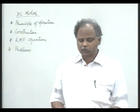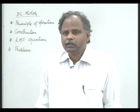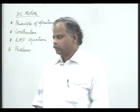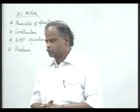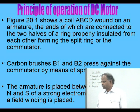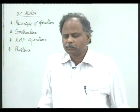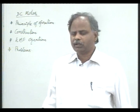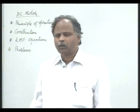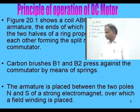To explain this further, figure 20.1 shows a coil ABCD wound on an armature, the ends of which are connected to the two halves of a split ring — the commutator — represented by S1 and S2, insulated from each other and connected to the two ends of coil ABCD. Carbon brushes B1 and B2 are pressed against the commutator by means of springs.